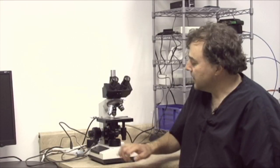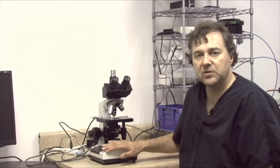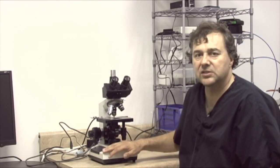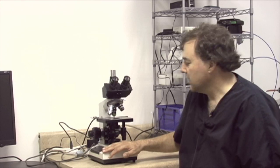Beneath the condenser is the lamp housing. Your scope may or may not have a field iris. The purpose of the field iris is to assist us in getting Kohler illumination. It's not an essential part of the microscope.